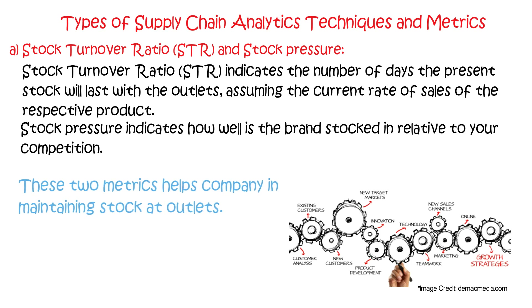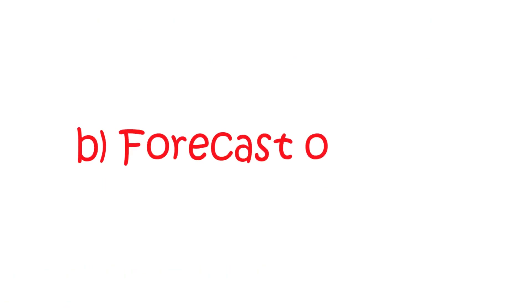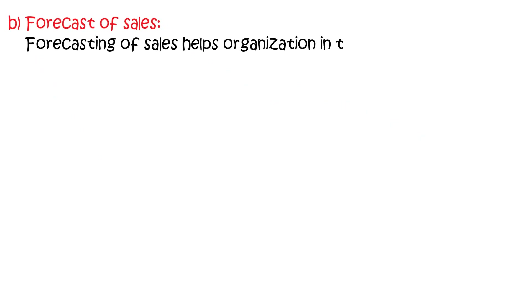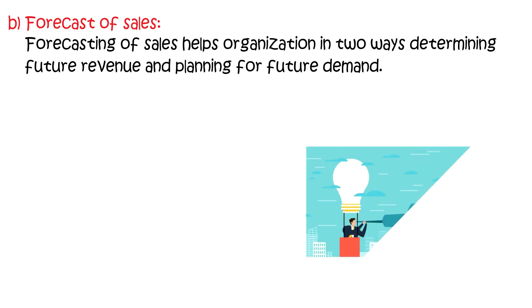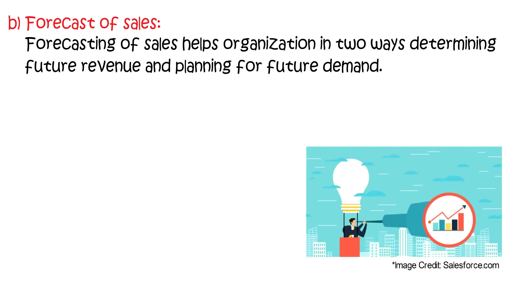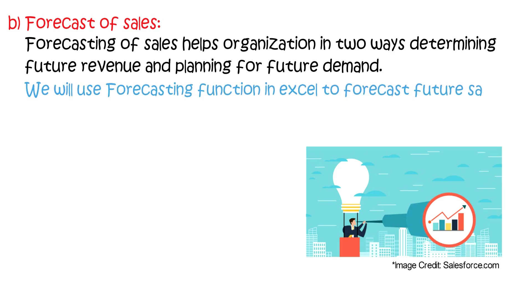These two metrics help a company in maintaining stock at outlets. Secondly, forecasting of sales. Forecasting of sales helps an organization in two ways: determining future revenue and planning for future demand. We will use the forecasting function in Excel to forecast future sales of a company.